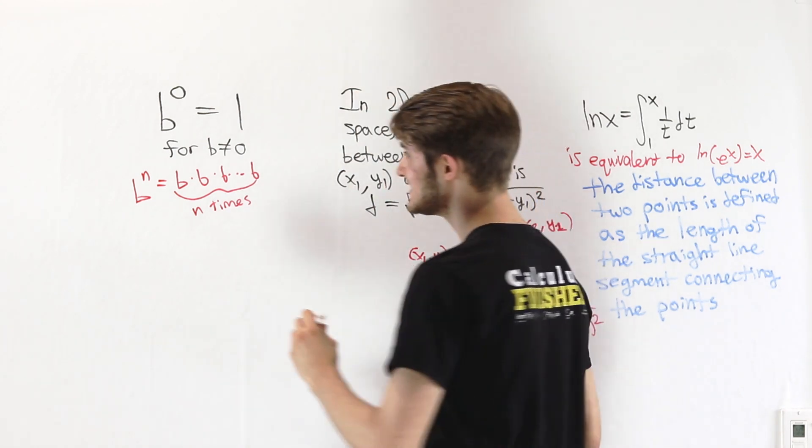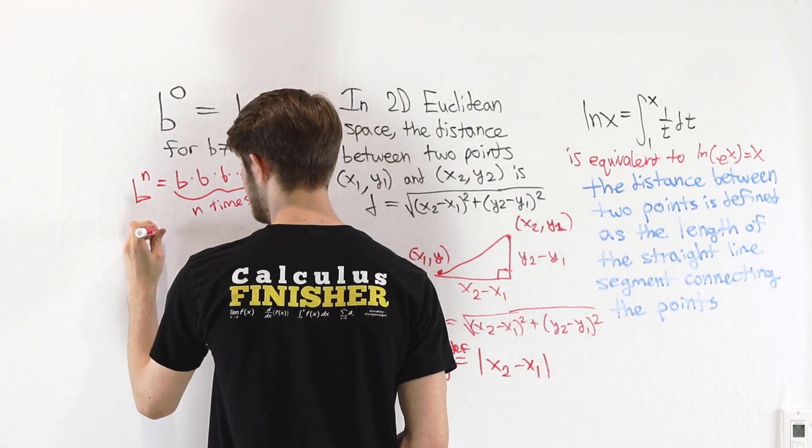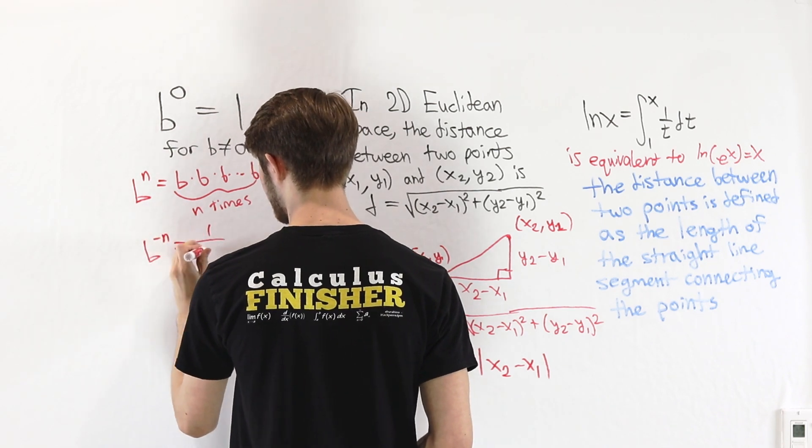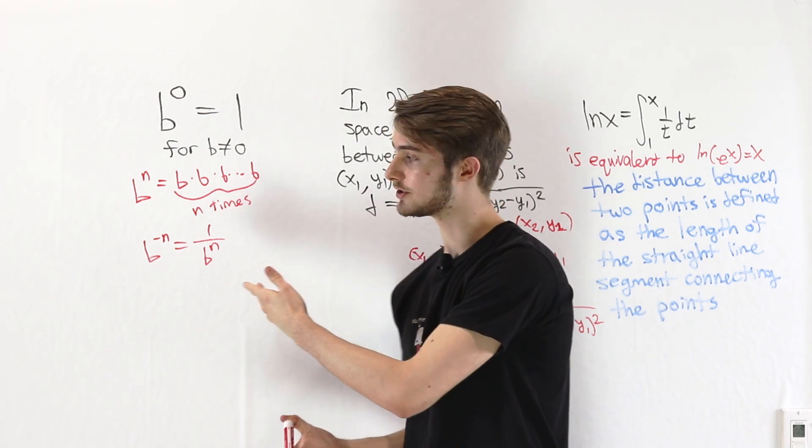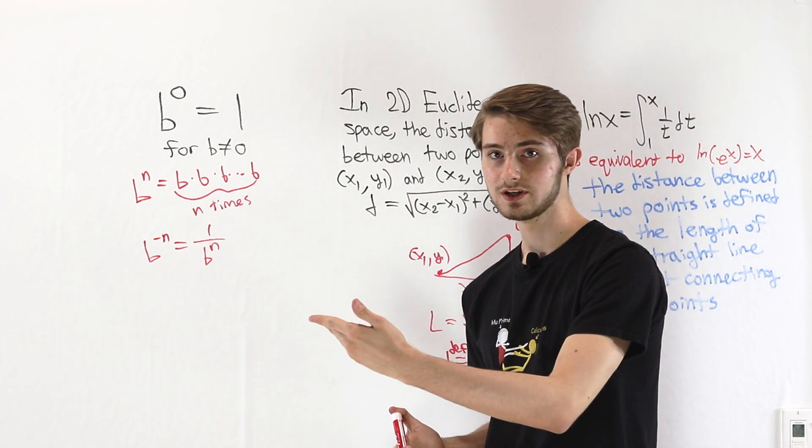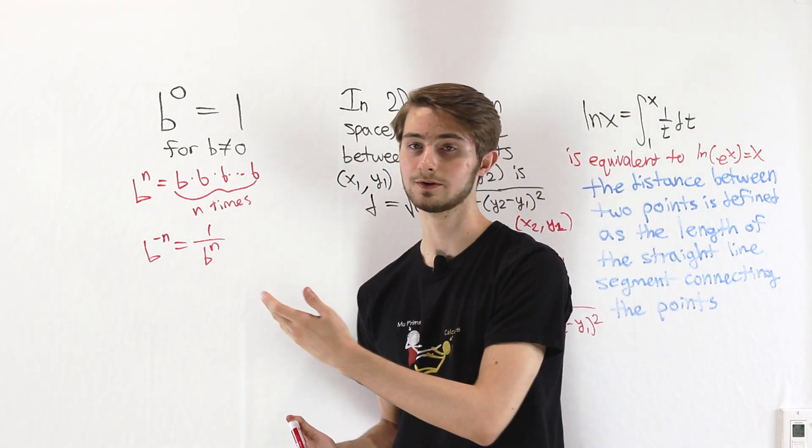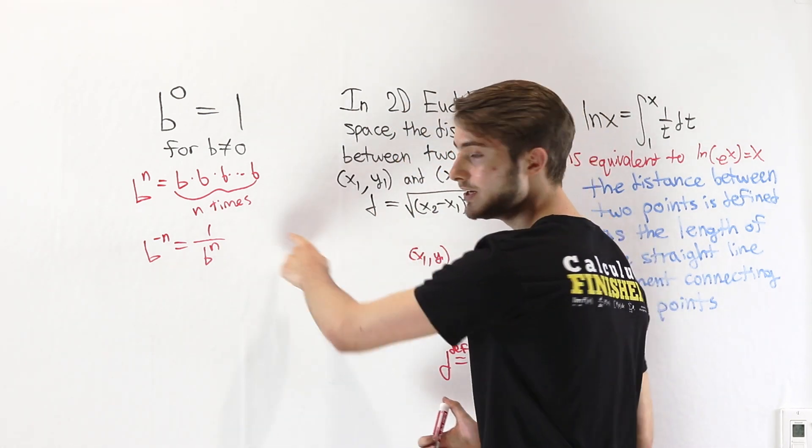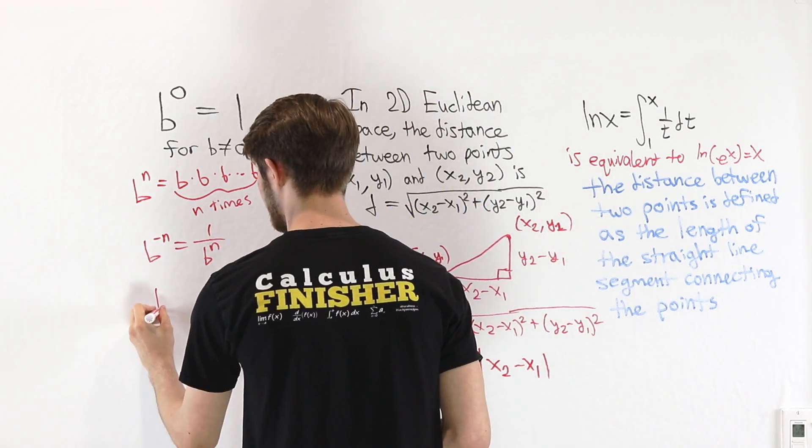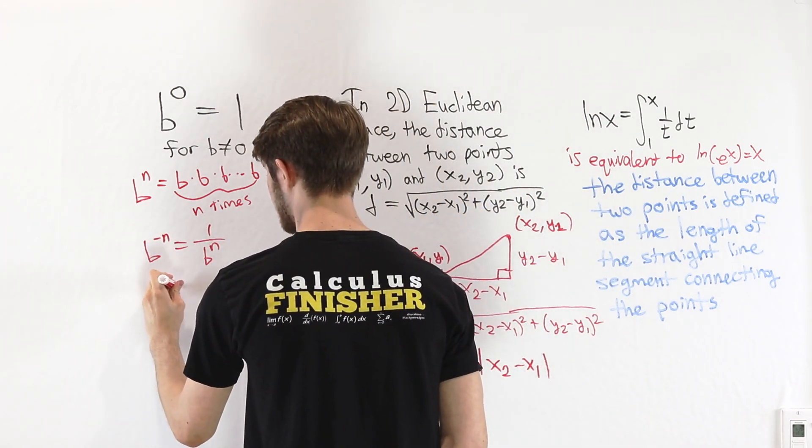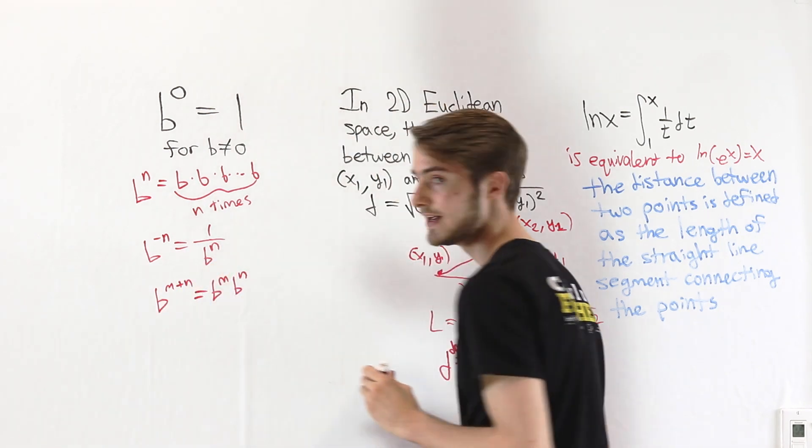We could even extend this and say that for a positive integer n, b to the negative n is 1 over b to the n. So now we've defined our exponential not only for positive integers but also for negative integers. All we're missing is 0. And from here we can prove using these definitions that b to the (m plus n) equals b to the m times b to the n.